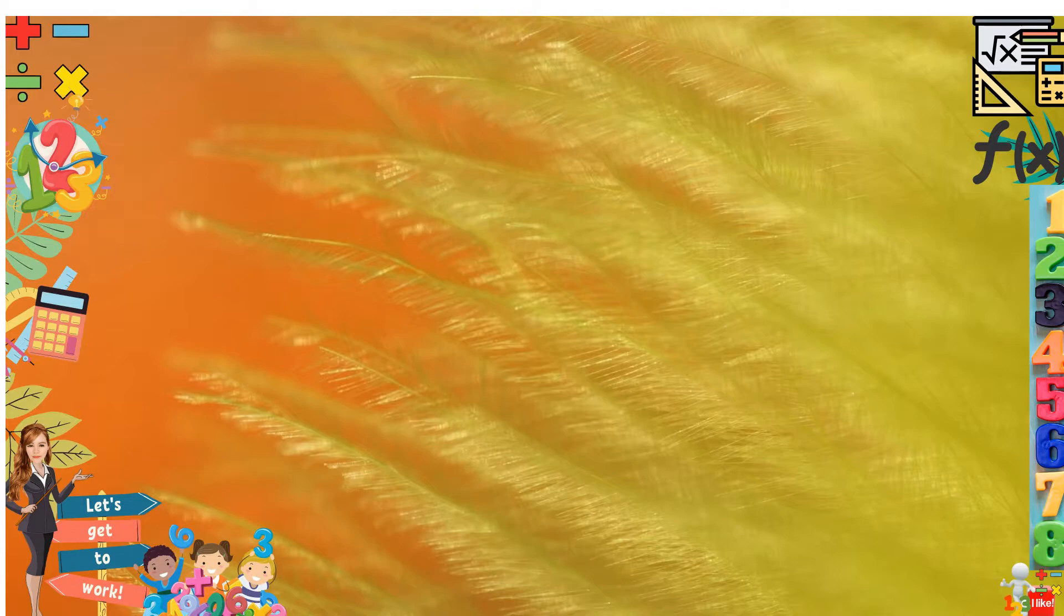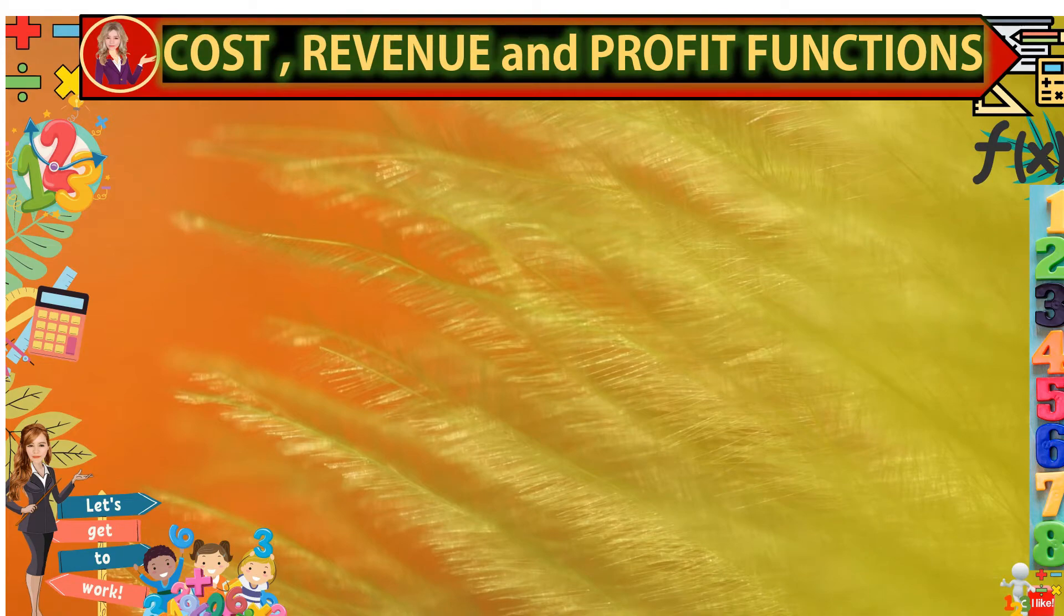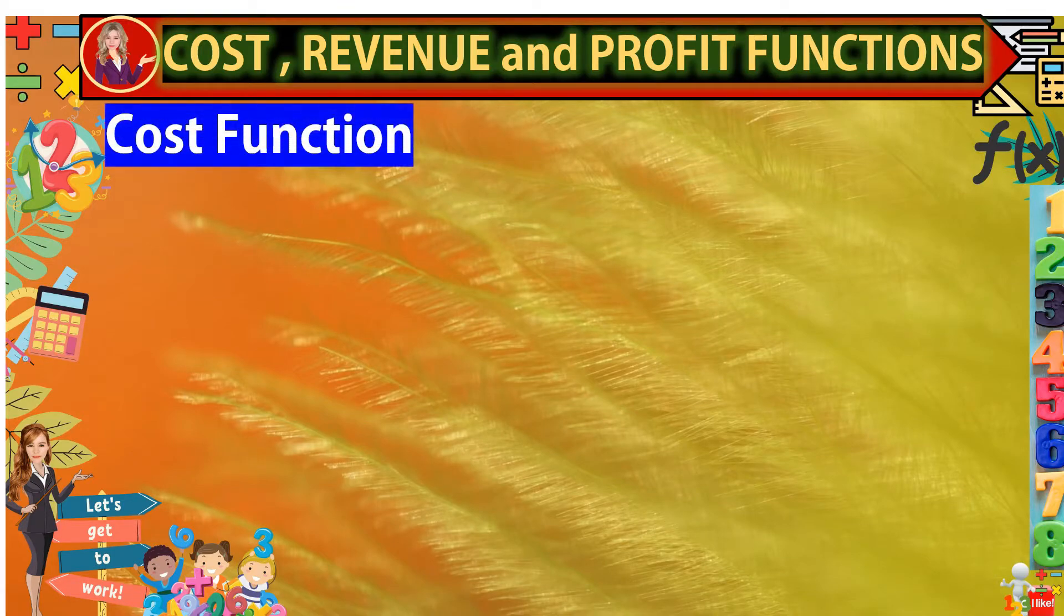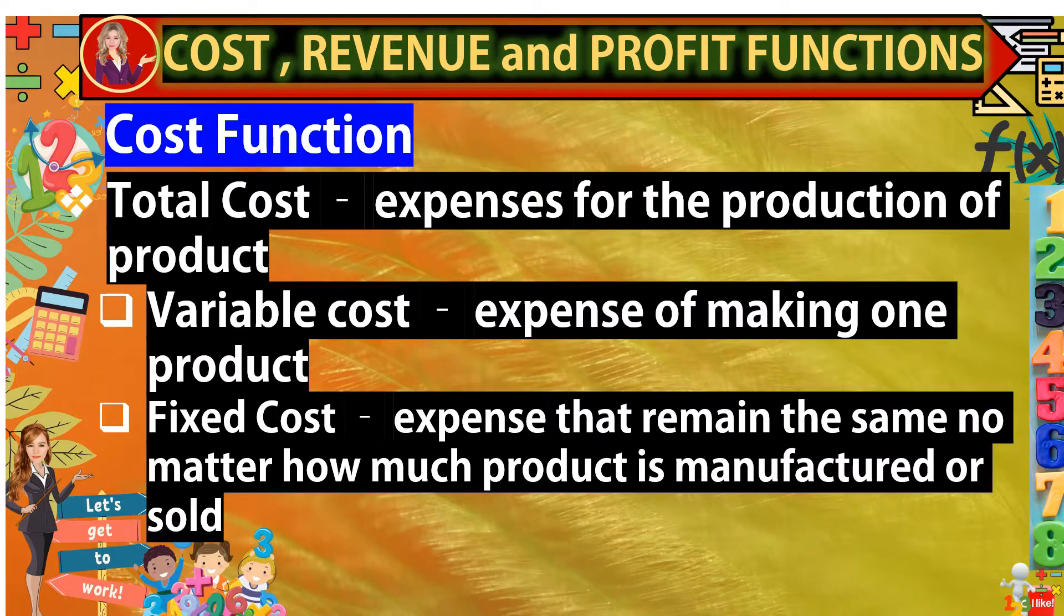Let us have now an application of functions. Functions can be applied in business. Let us discuss cost, revenue, and profit functions. These three concepts use the idea of linear function. What is a cost function? Total cost refers to the expenses for the production of product and in the total cost, it contains two. We have the variable cost and fixed cost. When we say variable cost, it is expense of producing or making one product. This cost depends on the quantity consumed and varies depending on the volume of the production. It includes expenses of raw materials, direct labor, and etc.